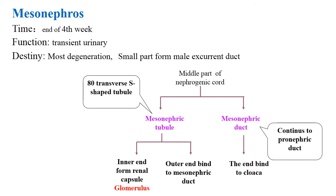Mesonephros consists of the middle part of the nephrogenic cord. It includes mesonephric tubules and mesonephric ducts. The mesonephric tubules divide into the inner end, which forms the renal capsule, and the outer end, which is blind and connects to the mesonephric ducts. The mesonephric ducts connect to the cloaca and incorporate the pronephric ducts retained from the pronephros.